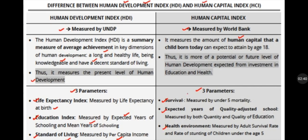The HDI — Human Development Index — is a summary measure of the average achievement in key dimensions of human development: a long and healthy life, being knowledgeable (education), and having a decent standard of living (per capita income). It measures the present level of human development.